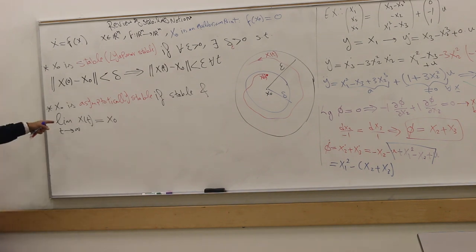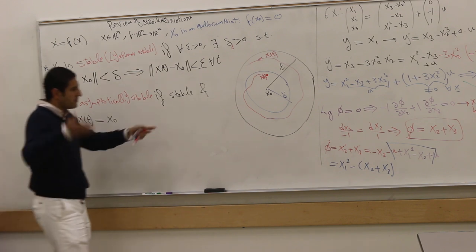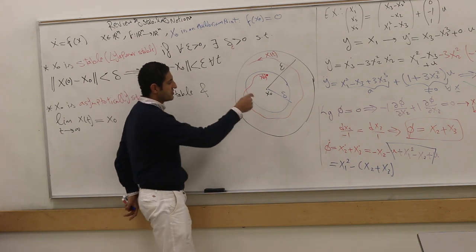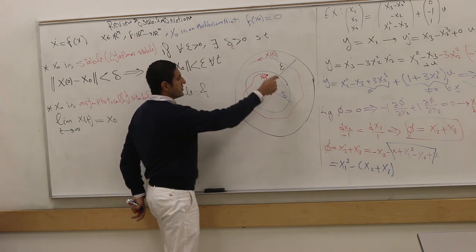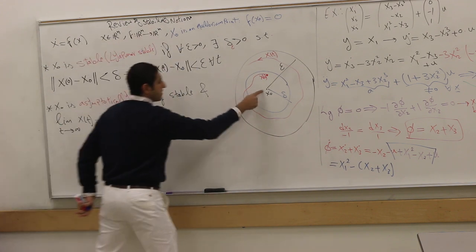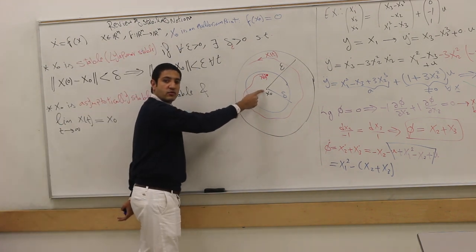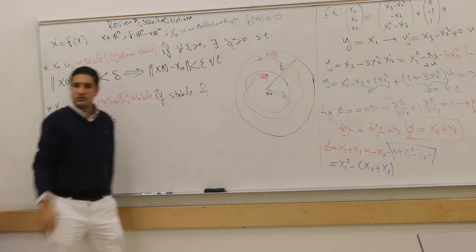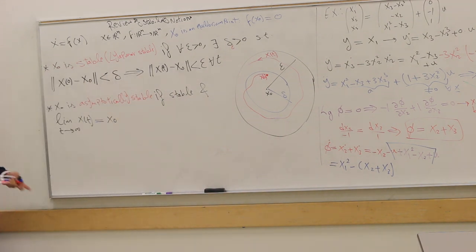But we have examples that we go back, but it's not stable. So we don't want to do that. So we have examples, and I can give you some differential equations, very simple, that you start here, you go do crazy things and come back eventually as time goes to infinity to the point. We don't like that, okay? This is not asymptotic stability.